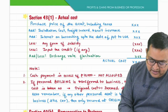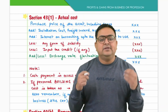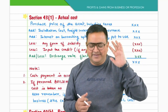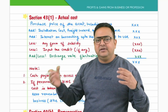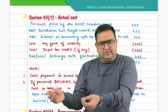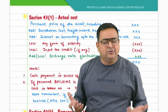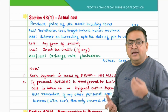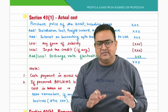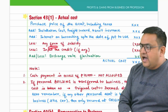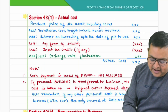If the assessee receives a subsidy, the actual cost must be reduced. For example, if a machine costs ₹10 lakh and a subsidy of ₹2 lakh is received from any person — government or otherwise — the actual cost is only ₹8 lakh. Subsidy can be received from any person, not just the government. Any input tax credit of GST or duty drawback of customs must also be subtracted from the actual cost.